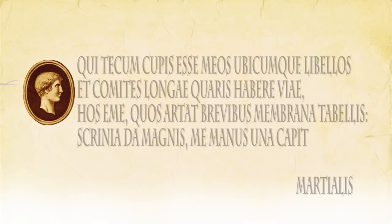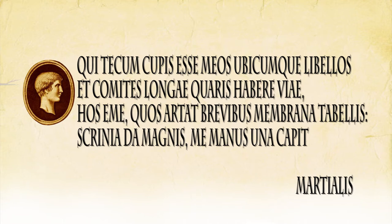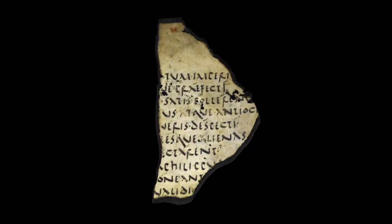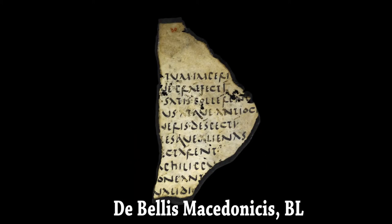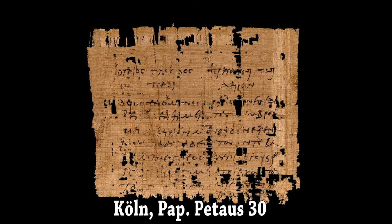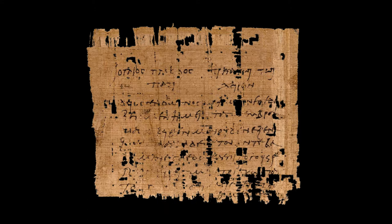Martial's verses go as follows: 'You, who long for my little books to be with you everywhere, and want to have companions for a long journey, buy these ones which parchment confines within small pages. Give your scroll cases to the great ones. One hand can hold me.' And that the Codex format was not one of Martial's extravagances in his time is proven not only by St. Paul's letter, but also by several papyri from the 1st and 2nd centuries found in Egypt, especially from the small fragment known as the Belis Macedoniensis, and the Petaus Papyrus 30, from a bookseller who specialised in parchment codices.